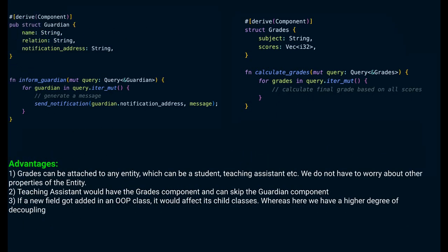How ECS solves this is we try to create components which are as small as possible. Instead of a student component which has grades and guardian information, we just create a grade component and a guardian component separately. We can attach the grades component to both students and teaching assistants. The guardian component we can attach it only to the students and not teaching assistants.